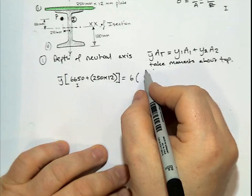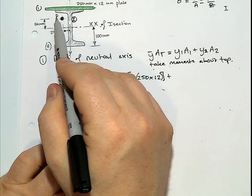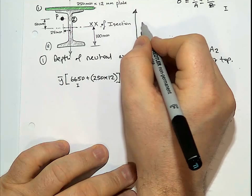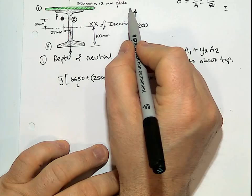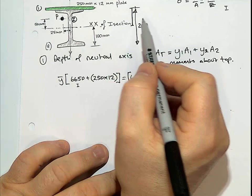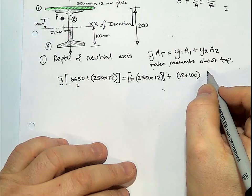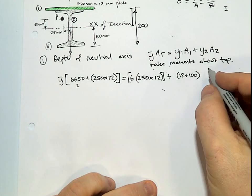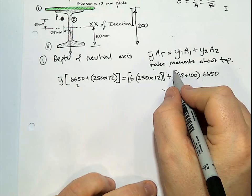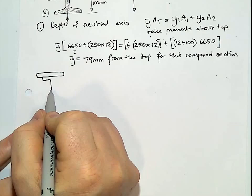Right, so from the top, it's a 12mm plate. So our Y1 is 6mm, times by the area of the plate. And in terms of the I section, it's 200 by 150. This distance being 200. So in terms of working out the distance, from the very top, all the way down to there, it's 12 plus 100. So our Y2 is 12 plus 100. And times by the area of the section. From the tables, our area is 6650.